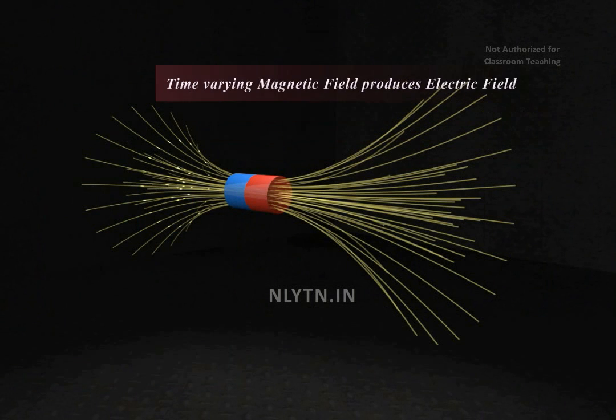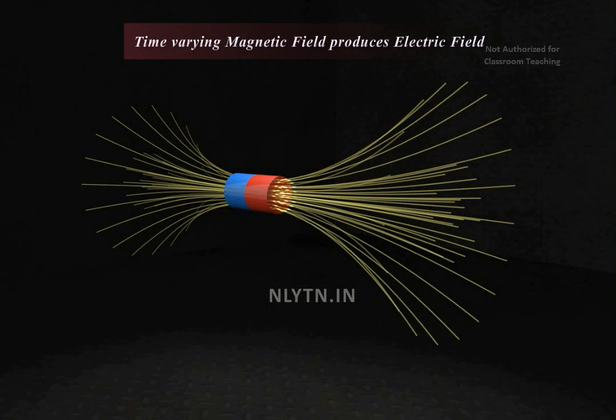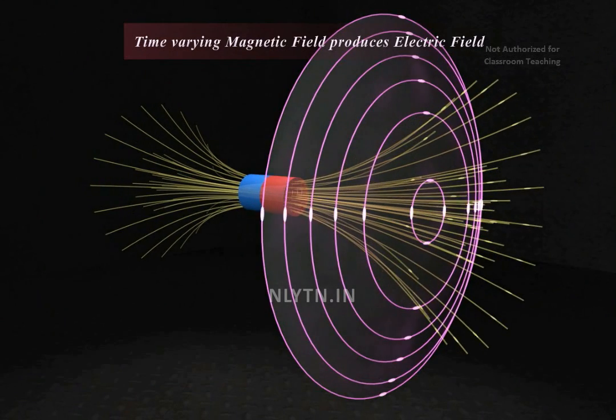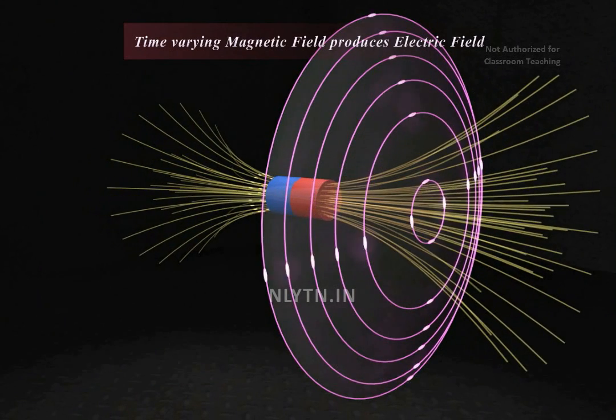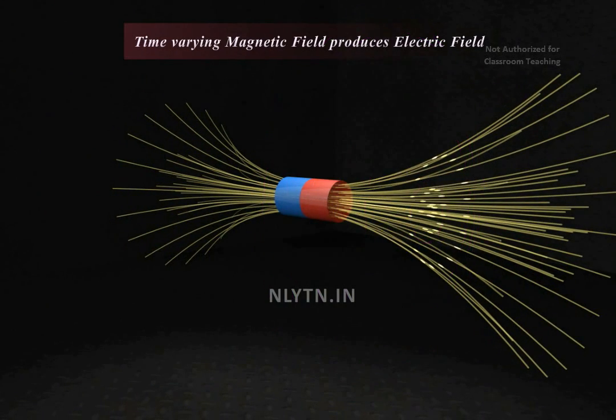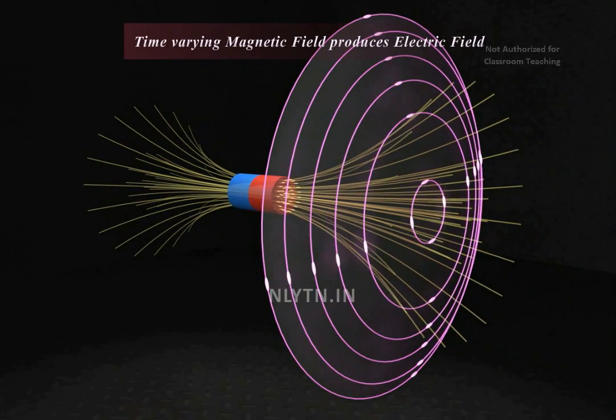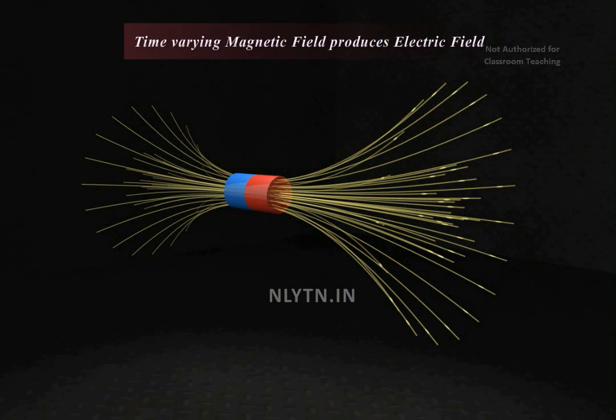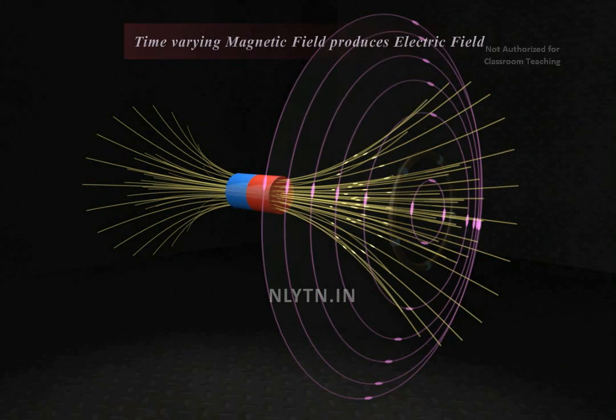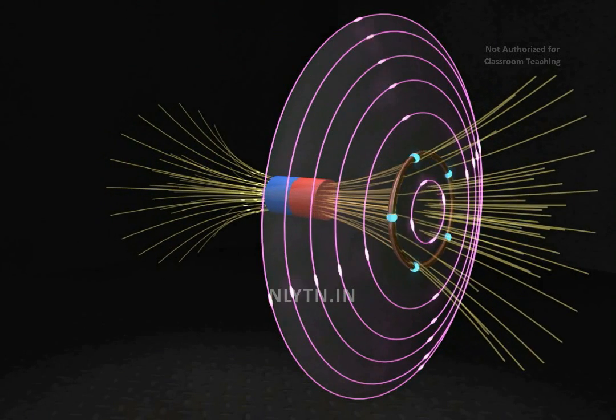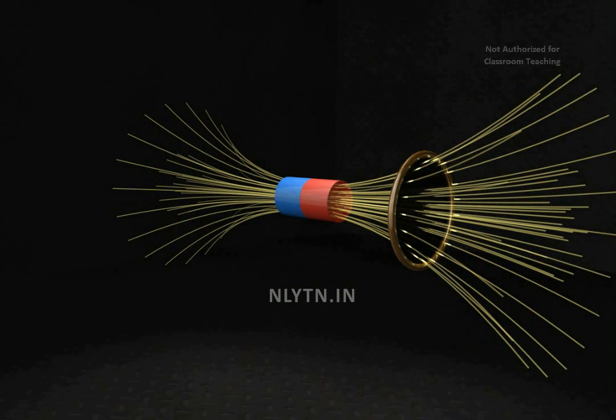So, whenever we have a situation where magnetic field is changing, an electric field is induced in space. And it is this induced electric field that affects the electric charge and produces an induced electric current.